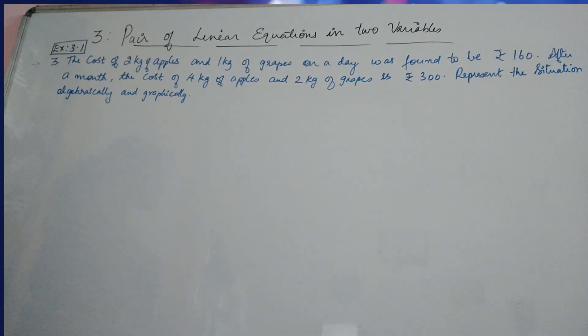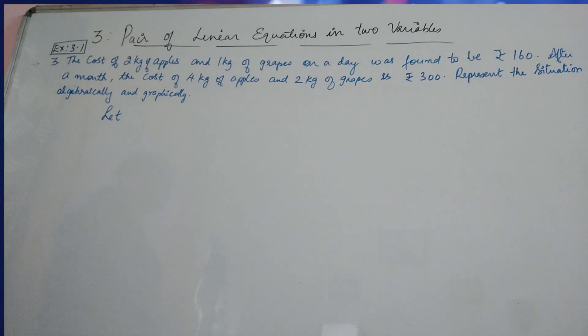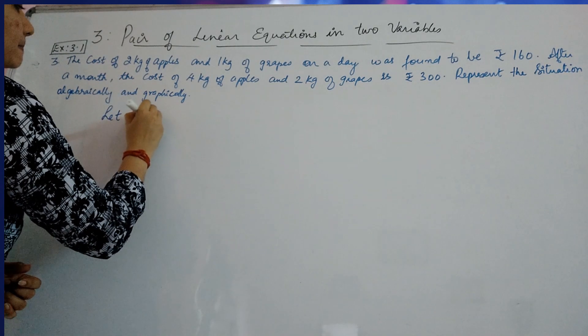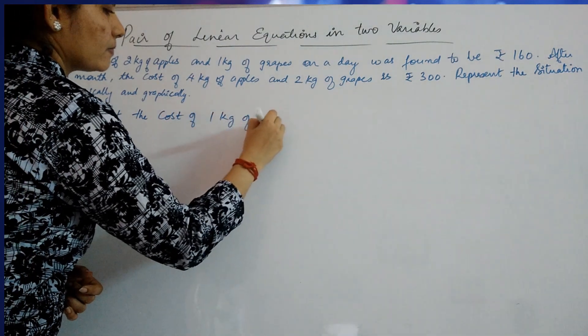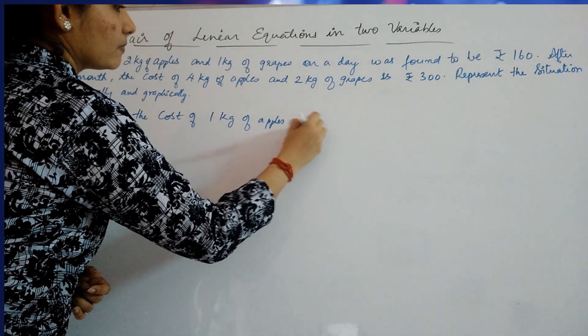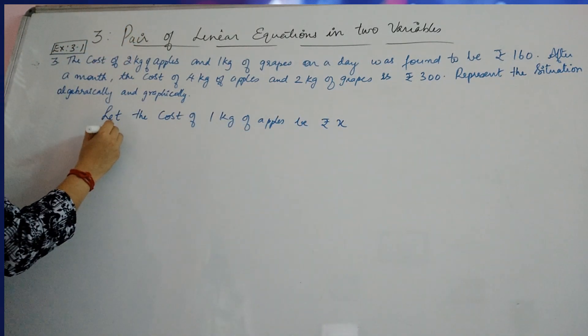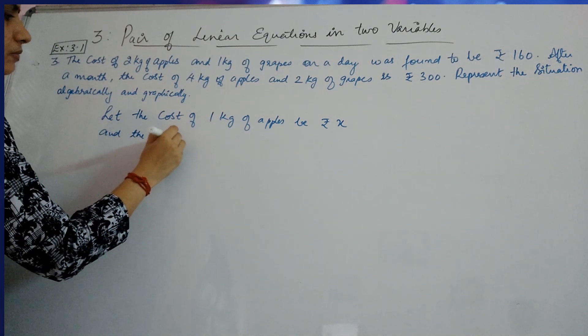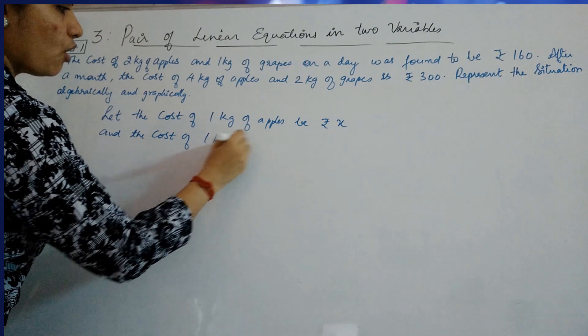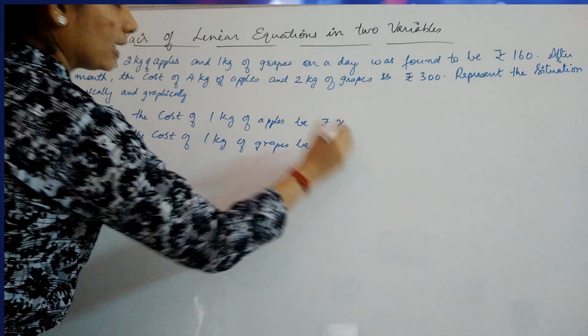So, we start the problem with taking, let the cost of 1 kg of apples be Rs. X. And the cost of 1 kg of grapes would be Rs. Y.